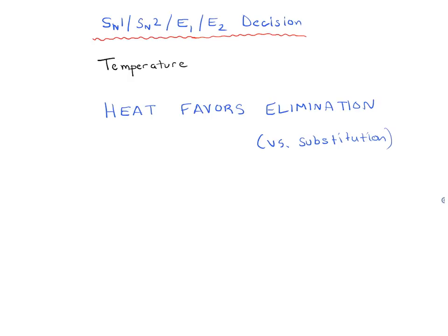I'm kind of reluctant to give specific examples because there isn't a lot of consistency, especially with regard to the E1. But if you just remember the bottom line that heat favors elimination reactions, and if you notice there is heat, chances are you're looking at an elimination reaction, assuming you've already made decisions about all the other variables involved. So that wraps it up.